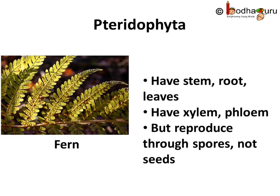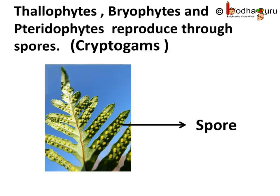Marsilea, ferns and horse tails are Pteridophytes. The plants in all three groups — Thallophyta, Bryophyta and Pteridophyta — reproduce through spores. The naked embryos are called spores. The reproductive organs of the plants in all these three groups are hidden, and therefore they are called cryptogames, or those with hidden reproductive organs. So, cryptogames are flowerless and seedless plants.